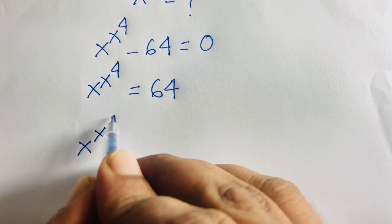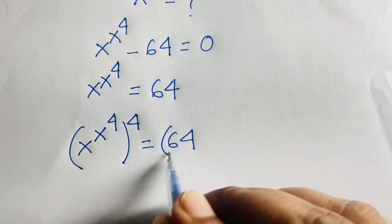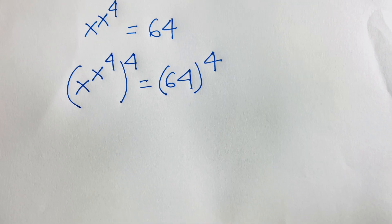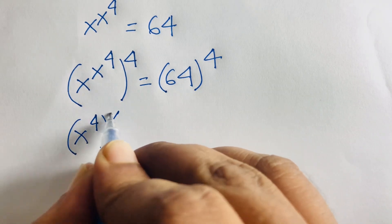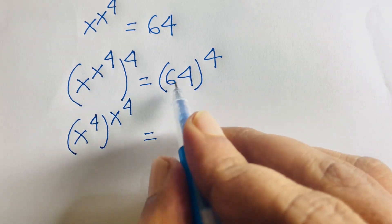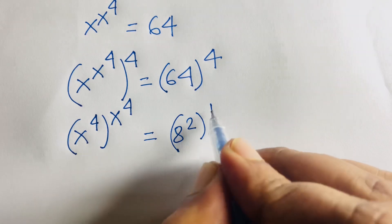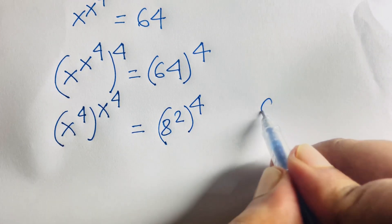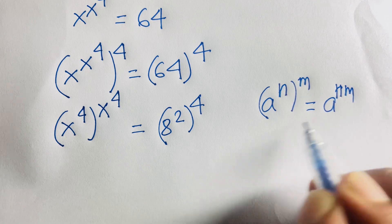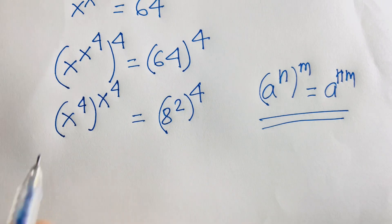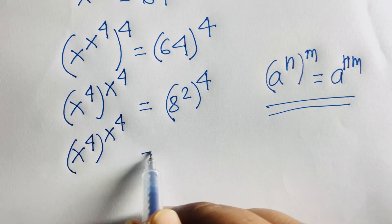Here is x to the power x, power is 4, is equal to 64. I use both sides power 1 over 4. Then I can say it will be x to the power 4 and here is x to the power 4 is equal to 8 squared. We know that 8 squared will be 64 and power is 4. We know that a to the power x to the power n times m, it will be n times m.